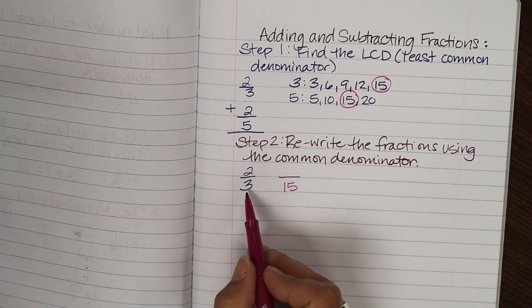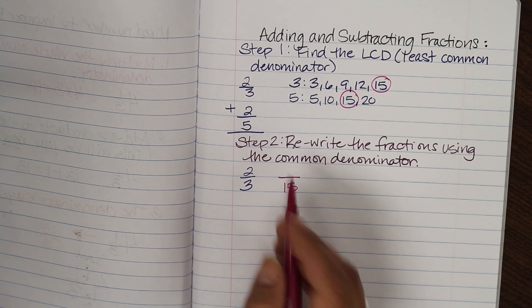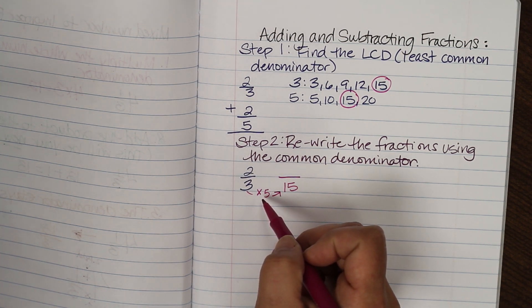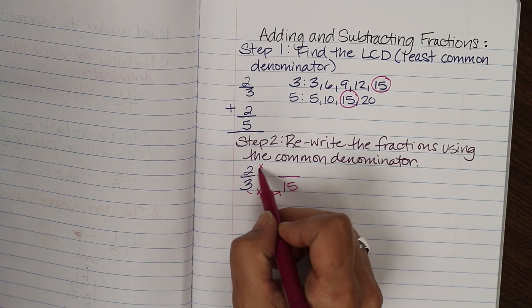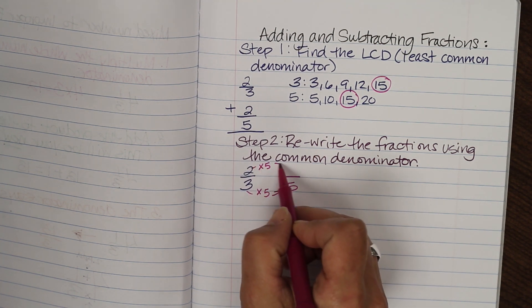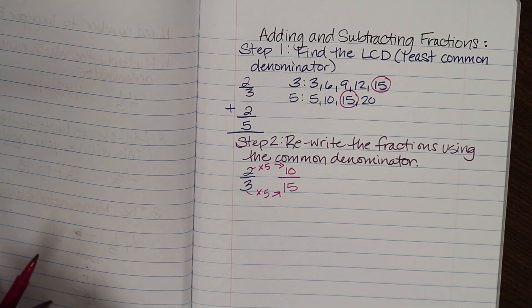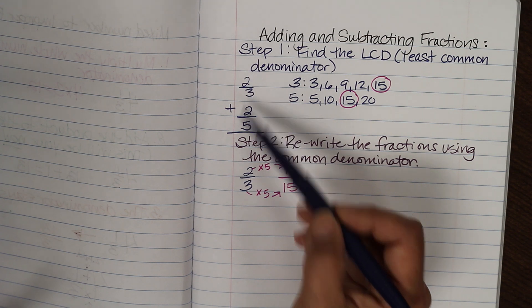Fifteen. So to go from three to fifteen I multiplied five. And if I multiply my denominator by five I'm also going to have to multiply my numerator by five. So two times five is ten. So this was our first fraction.